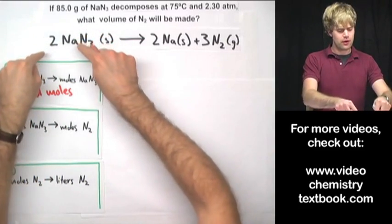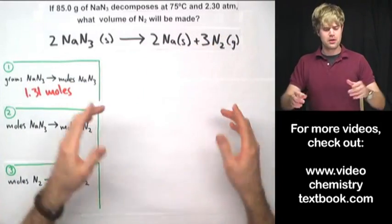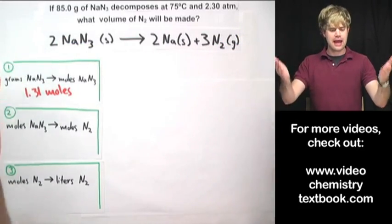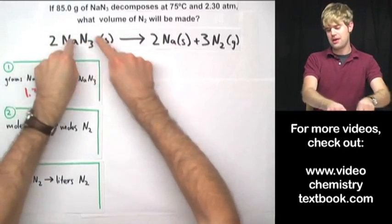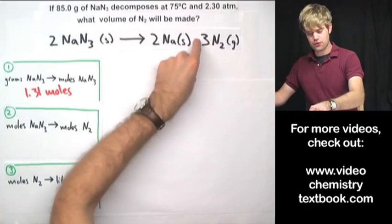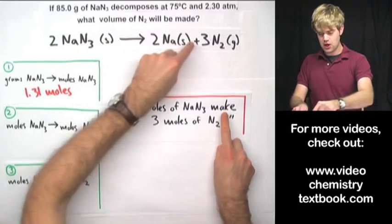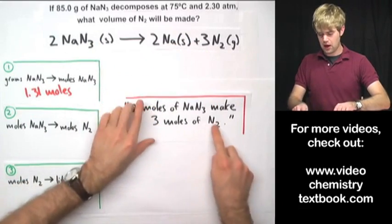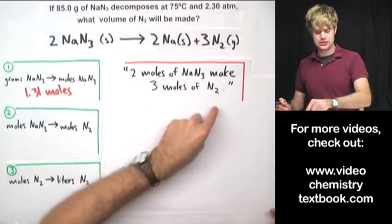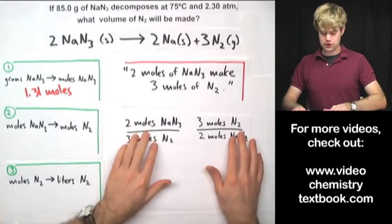Now we start with 1.31 moles of sodium azide and want to find out how many moles of nitrogen gas we'll get. We have to use the equation to set up a proportion. Looking at the equation, the coefficients 2 and 3 tell us that 2 moles of NaN3 make 3 moles of N2. I can express this as a conversion factor.